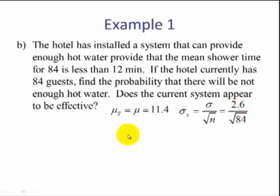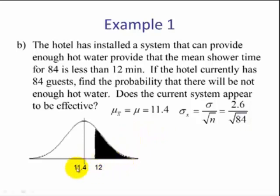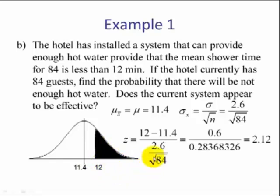Let's draw a picture. We have our mean, we have our x-bar that we're interested in, and we want the area to the right. So we find the z-score for x-bar equals 12. We take 12 minus the mean divided by the standard deviation, and we see that the z-score is 2.12.